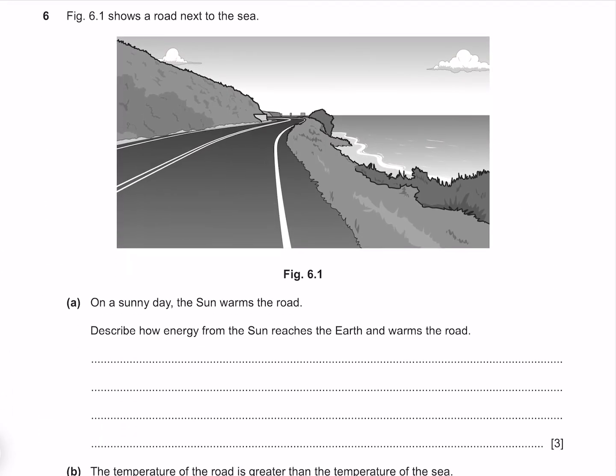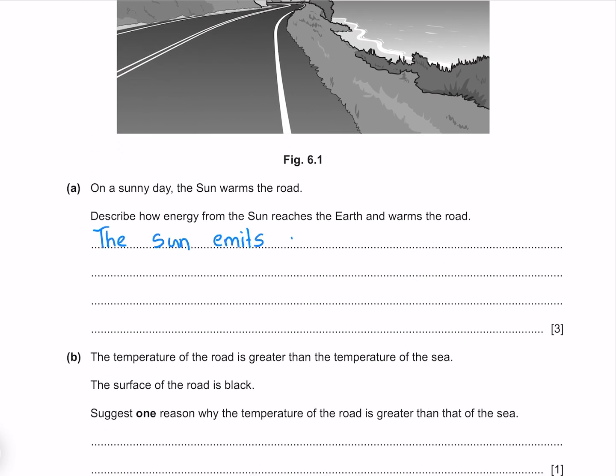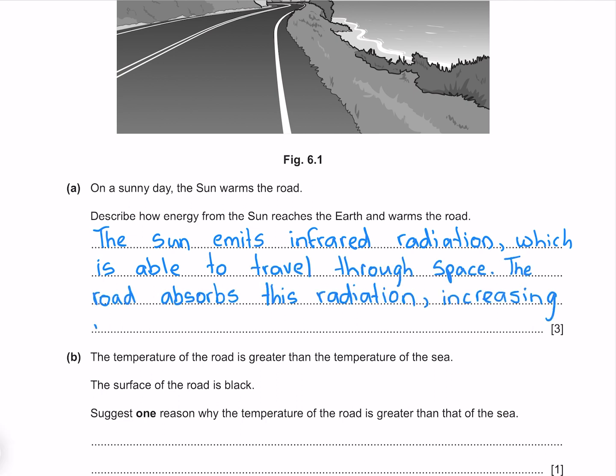Figure 6.1 shows a road next to the sea. On a sunny day, the sun warms the road. Describe how energy from the sun reaches the earth and warms the road. The sun emits infrared radiation, which is able to travel through space. The road absorbs this radiation, increasing its temperature.